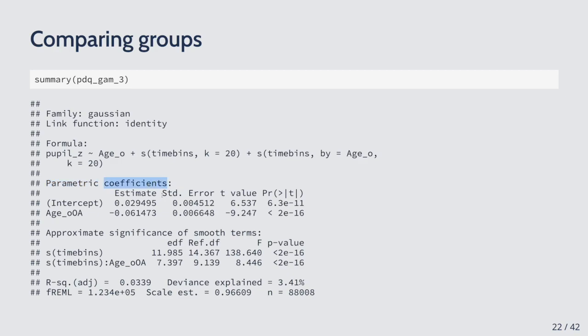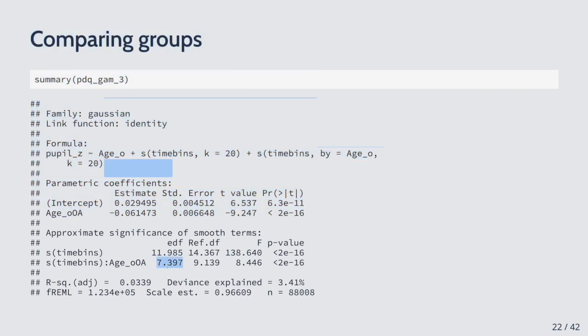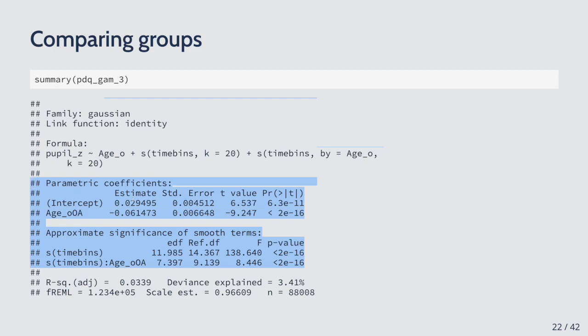An important distinction: the parametric coefficients capture differences in the overall height of the curve, while the smooth terms capture differences in shape. So you could have two curves with exactly the same shape but one higher than the other — that would give significant parametric coefficients but a non-significant difference smooth. This interpretation is somewhat different from what you'd expect in linear models.